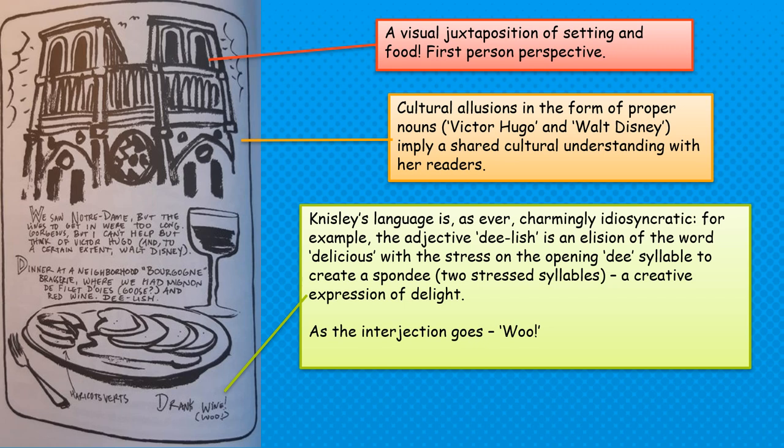The extract finishes with a juxtaposition of setting and food in a first-person perspective. We feel like we're looking up at Notre Dame with the sun shining all around it — the emanata representing the sunshine — and we also feel that we've got a plate of food right in front of us. There are cultural allusions referencing Notre Dame: she references Victor Hugo, a famous French literary figure, and Walt Disney — perhaps less literary but certainly no less famous. That's a combination of highbrow culture and popular culture, a way of broadly addressing her audience, who will have different perspectives on Paris, connecting with a range of readers through these cultural references.